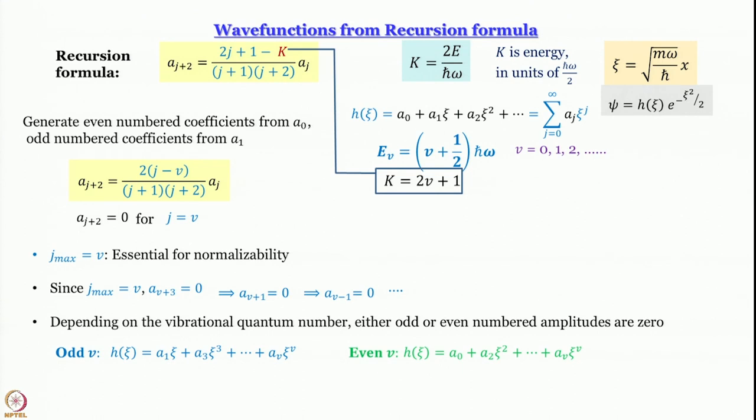What we have been able to do is we have been able to write, instead of one, two separate series - and this time terminated series for the function h of xi. For odd values of v, h of xi equals a_1 multiplied by xi plus a_3 multiplied by xi cube plus a_5 multiplied by xi to the power 5, and so on. The last term is a_v multiplied by xi to the power v. For even, we have h of xi equal to a_0 plus a_2 multiplied by xi square plus a_4 multiplied by xi to the power 4, so on and so forth. Last term is a_v multiplied by xi to the power v.